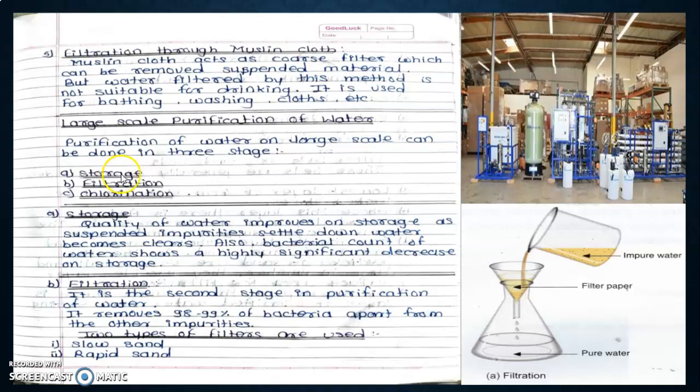Purification of water on large scale can be done in three stages. Number one is storage, filtration, and chlorination.